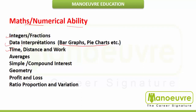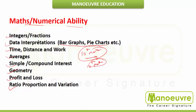You can pause this video and jot down the topics for your reference. Next topics are averages, simple and compound interest, geometry, profit and loss, and ratio and proportion and variations. For math, you need very clear basics from 10th standard, and for some parts you also need 11th and 12th math — so basics of 10th, 11th and 12th math are all required.